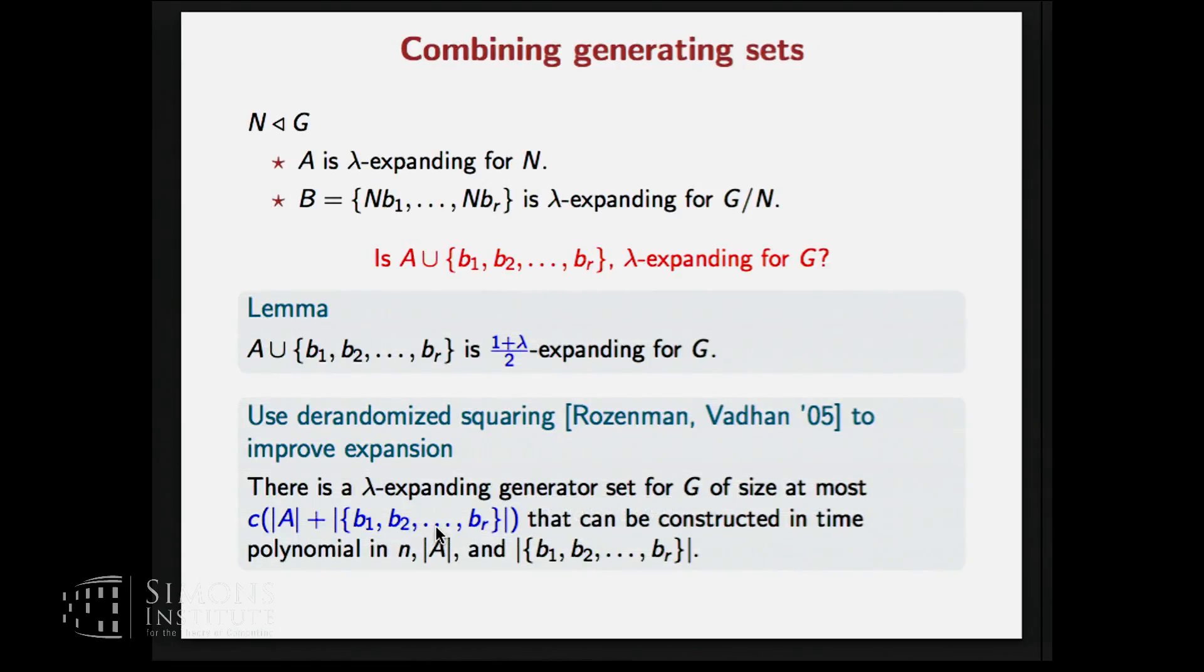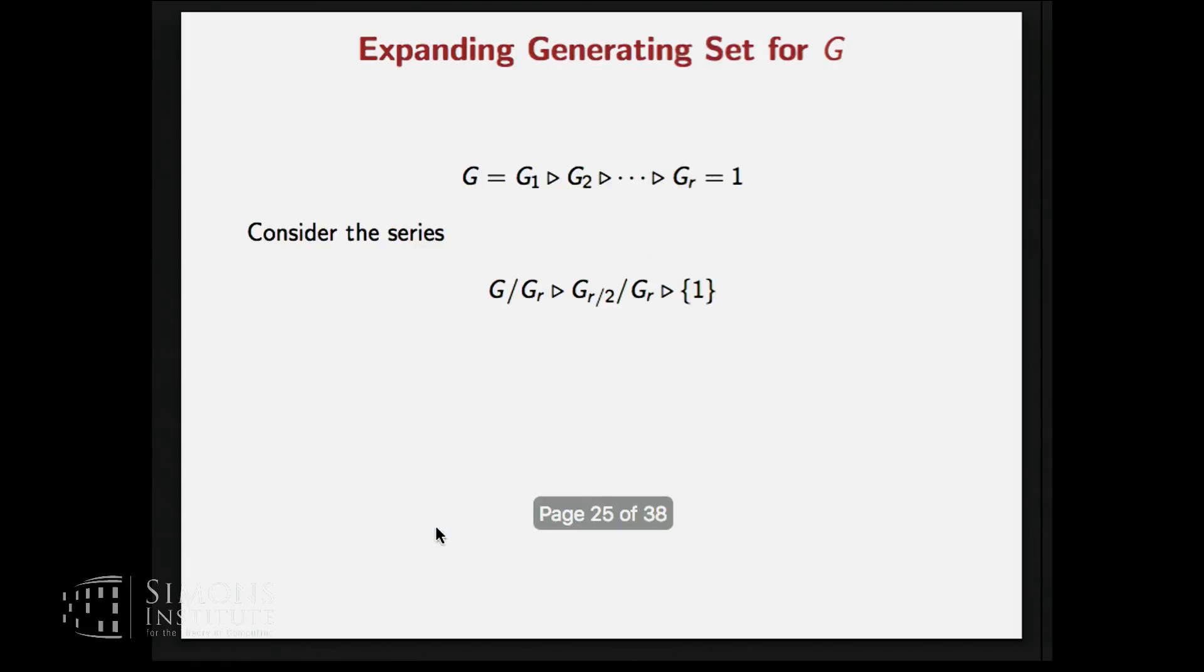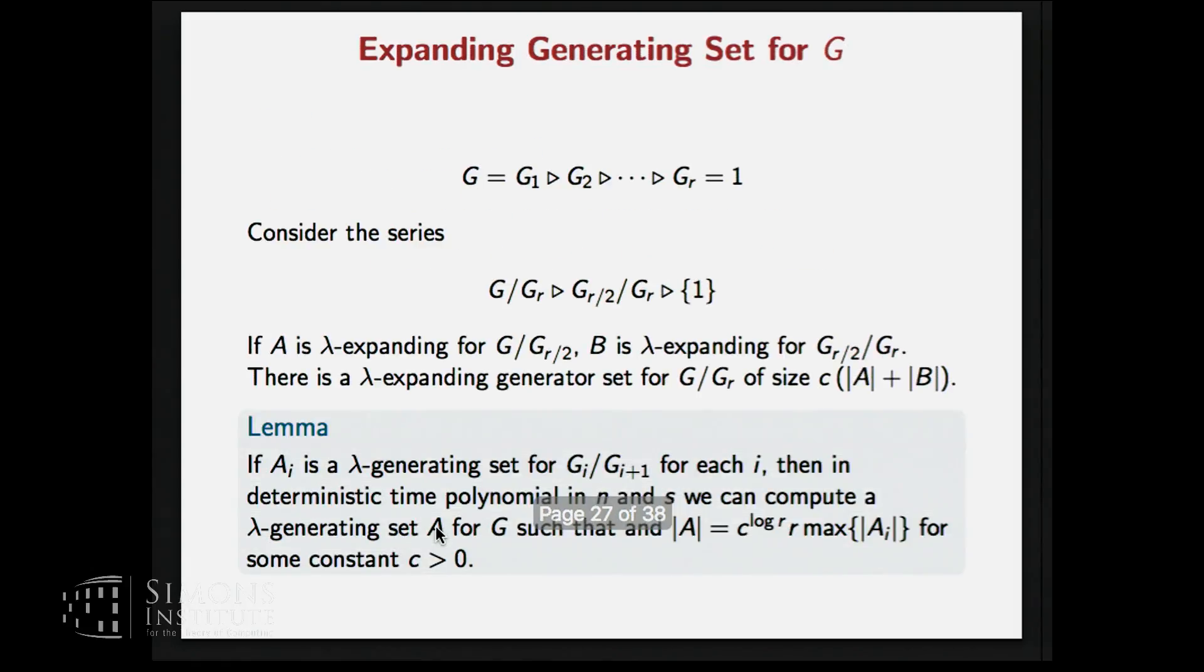So we have seen one step where we get an expanding generating set for a normal subgroup and a quotient group. And from that, we get an expanding generating set for the original group. And now we recursively want to apply this procedure. So recursively apply this procedure to get an expanding generating set of this particular size where now it remains to get this Ai which is an expanding generating set for the quotient group. Now this quotient group is abelian and we expect that it might be easier to deal with abelian groups than with non-abelian ones.